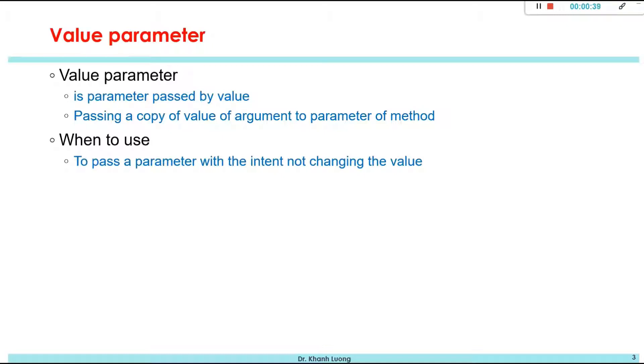It means that we will only pass a copy of value of argument to the parameter of method. So when we use this type of parameter, we want to pass a parameter with the intent not changing the value.